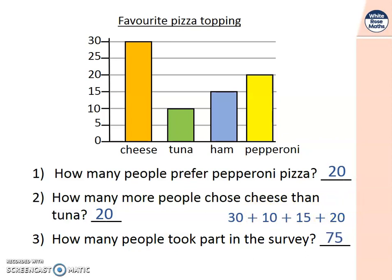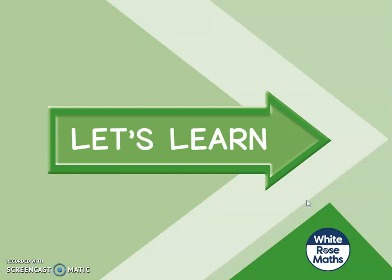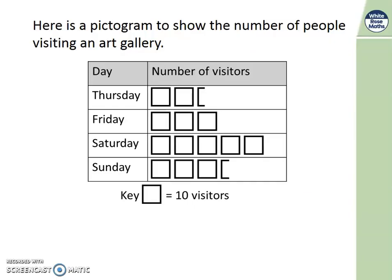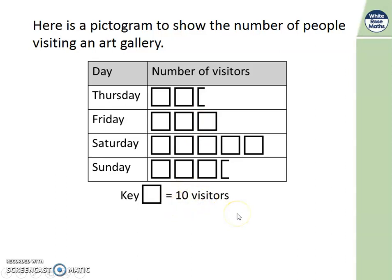You need these skills and we need to understand this language because we're going to be using it in our learning today. Let's have a look at this pictogram - we did pictograms quite recently. This is showing the number of people who visit an art gallery, with the days Thursday, Friday, Saturday, Sunday, and the number of visitors. Look at the key - one square is equal to 10 visitors. Half a square would be worth half of 10, which is 5. Use that information to help you.